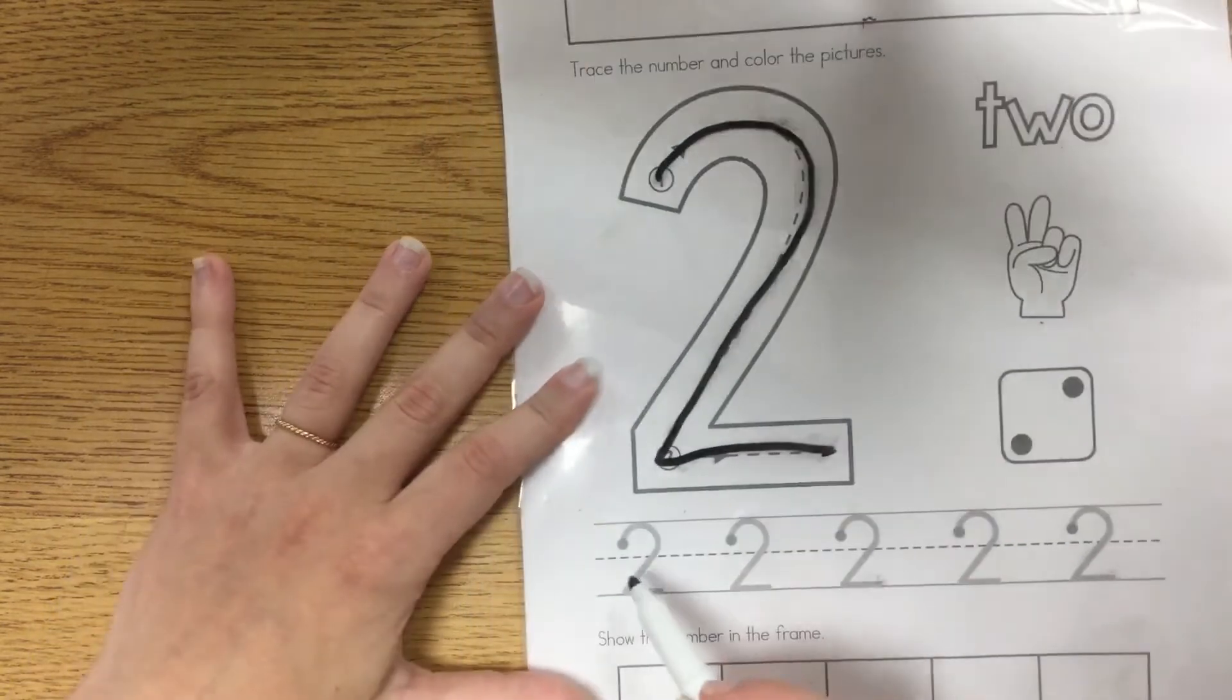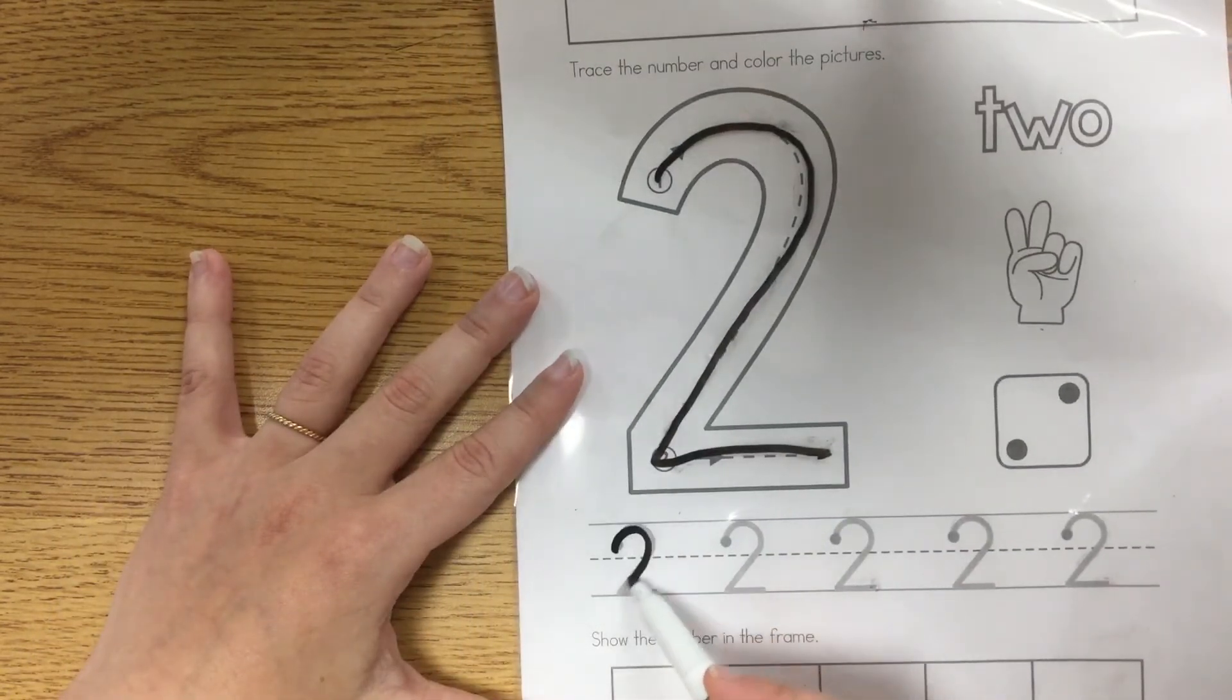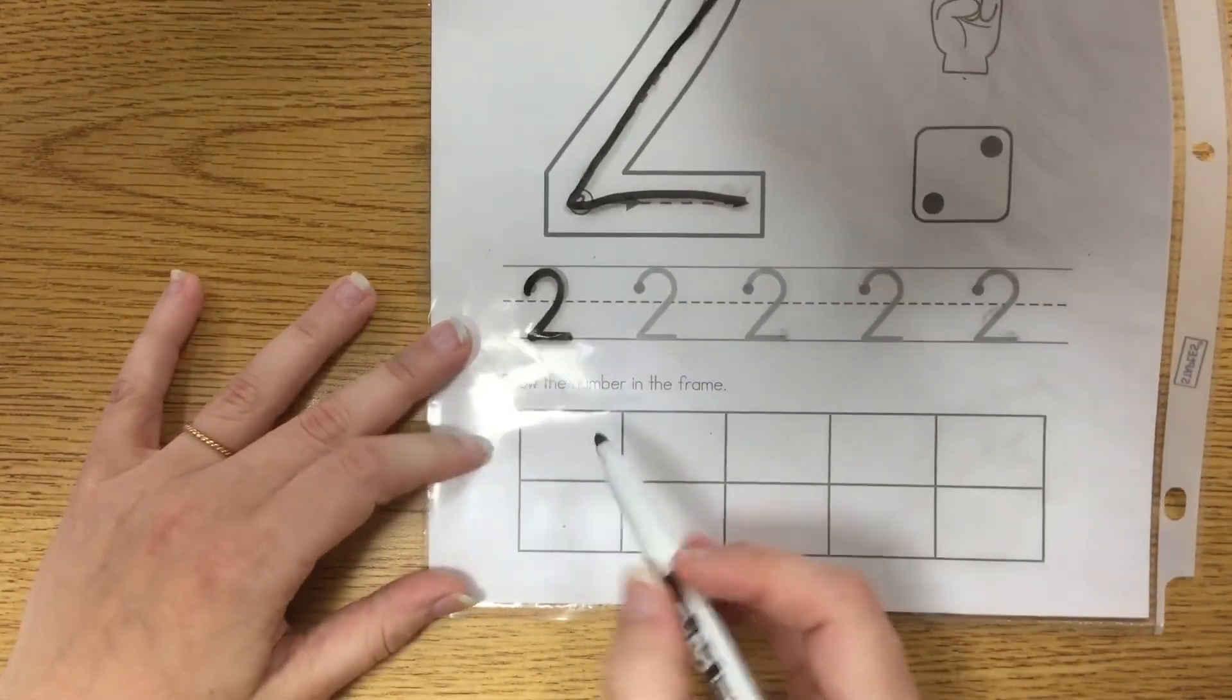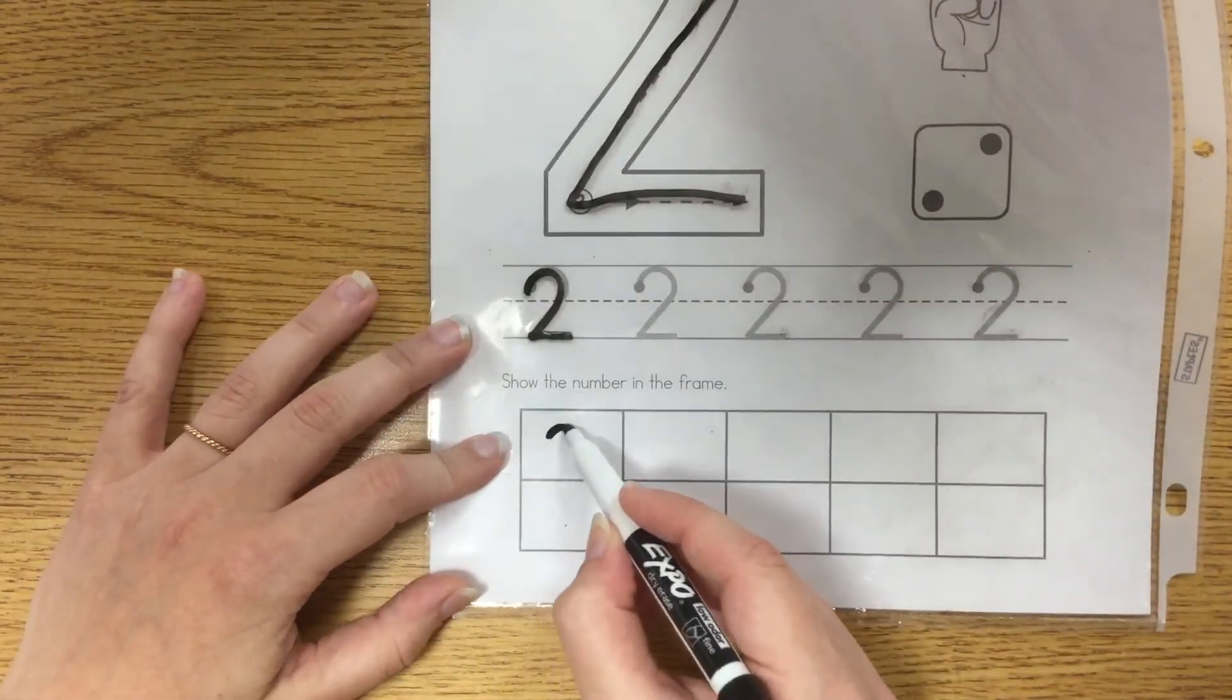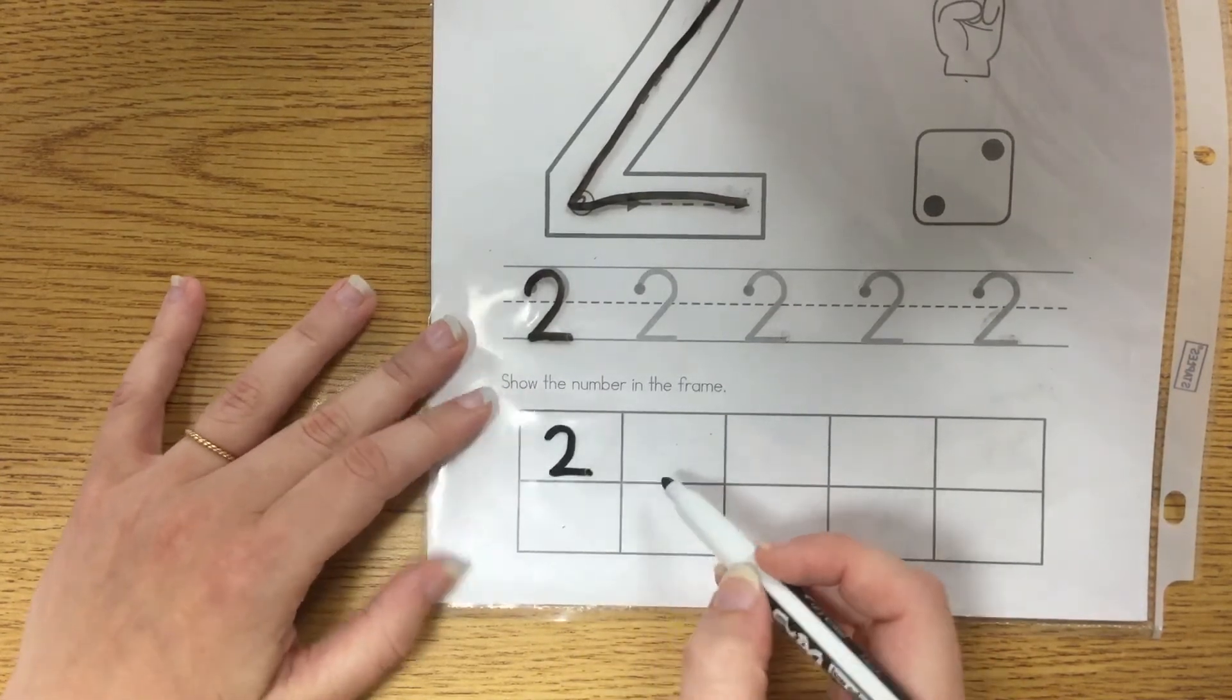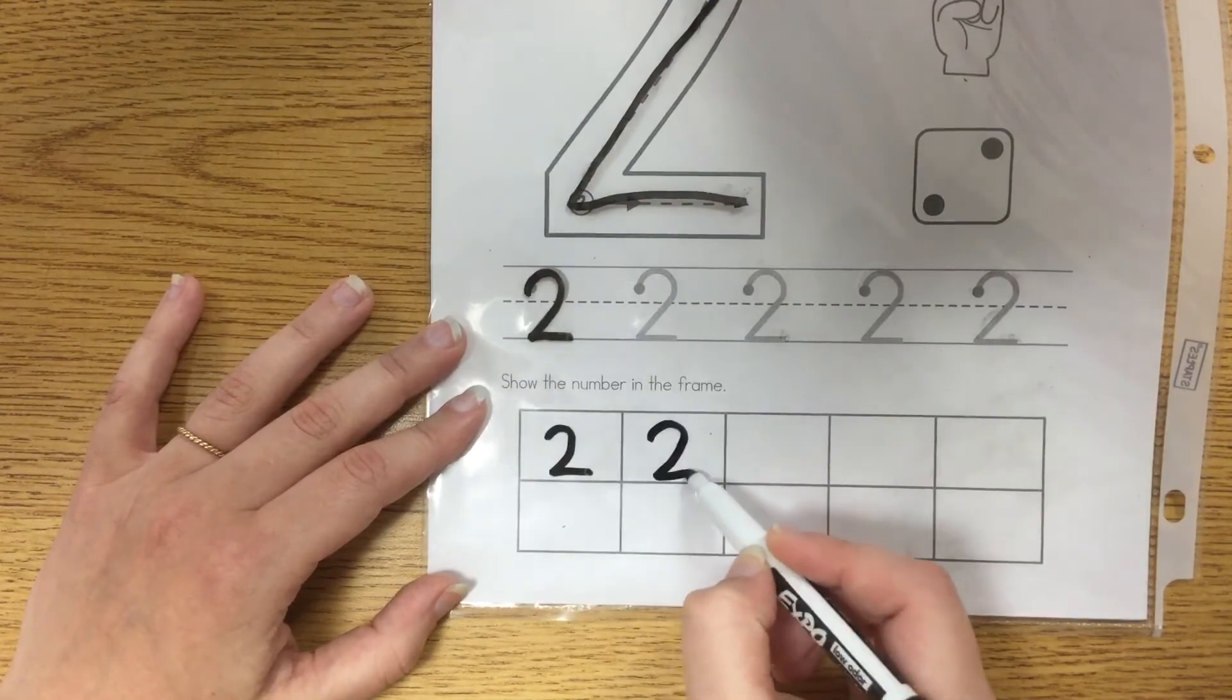And then I have them practice little ones around and over. And then they fill up the boxes with number two. It's not really what the directions on the page do but I just wanted them to practice writing it first. Round and over.